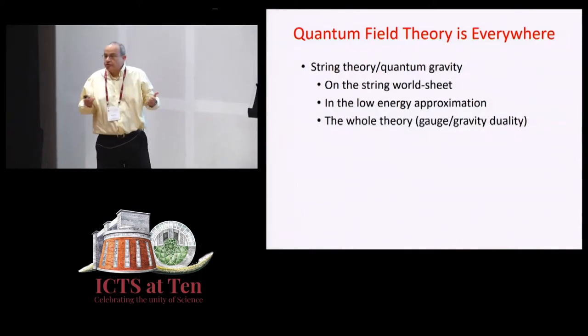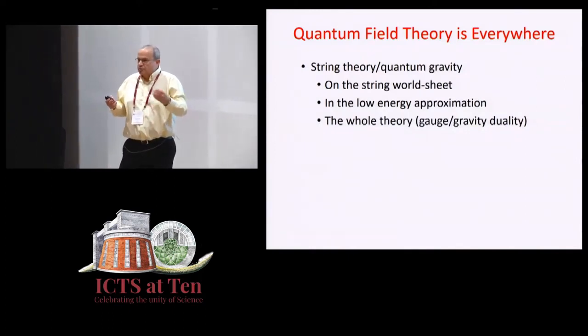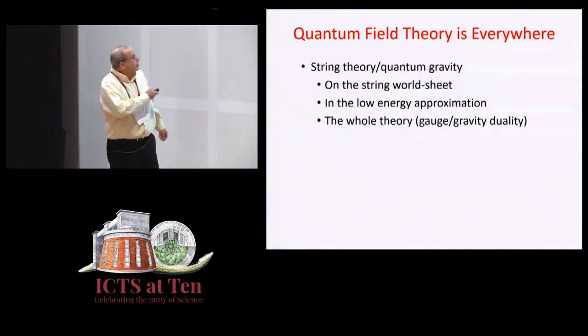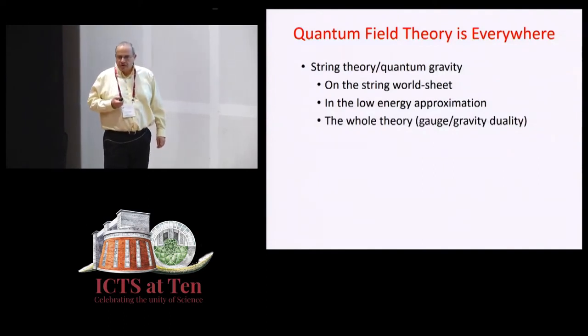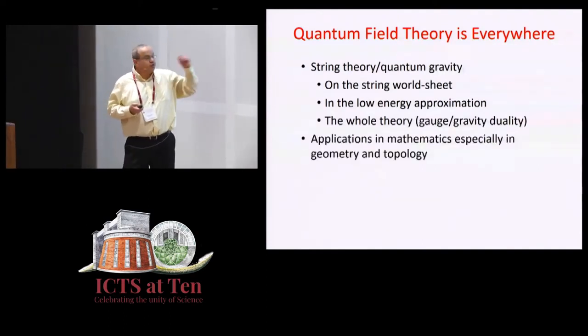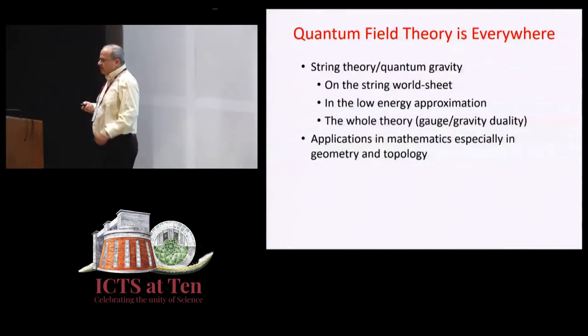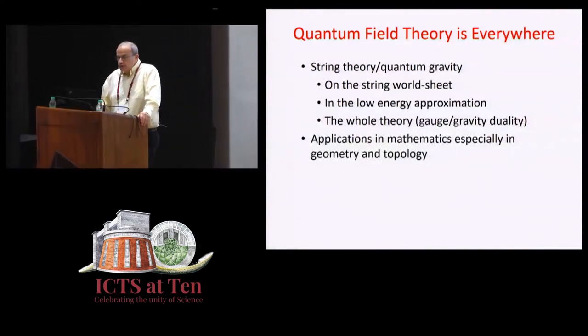The second application is in the low-energy approximation, where we have ordinary particles, ordinary fields, where the string is approximated by a point, and that's another place quantum field theory appears. And over the last 20 years, it became clear that the whole theory could be just a quantum field theory in disguise. And that came from gauge gravity duality, or ADS-CFT. I'll have a little bit more to say about that later. So that was another application.